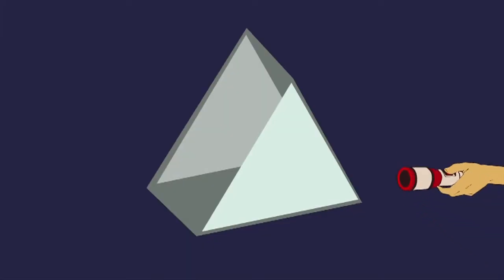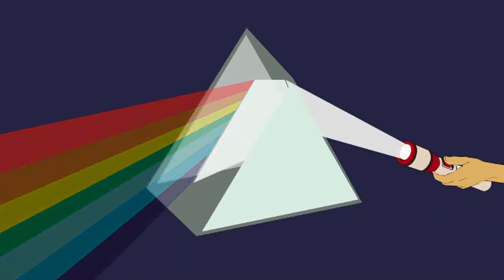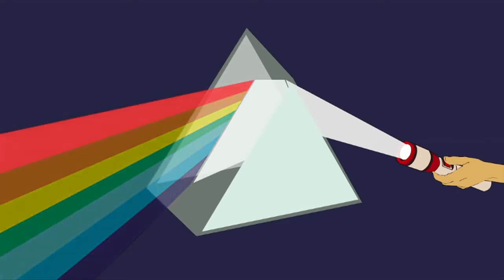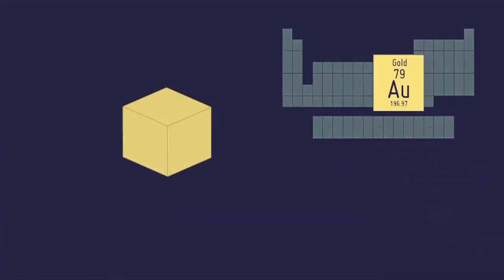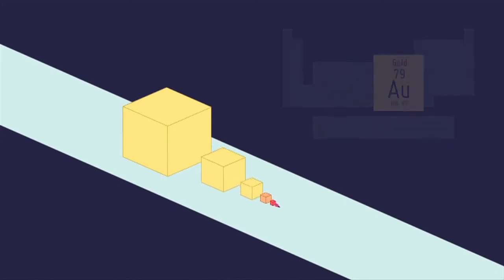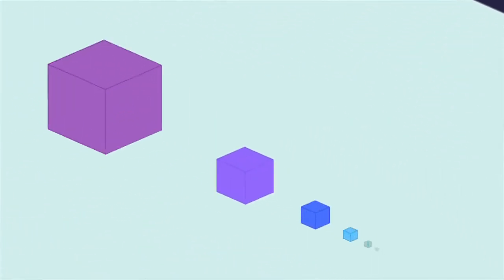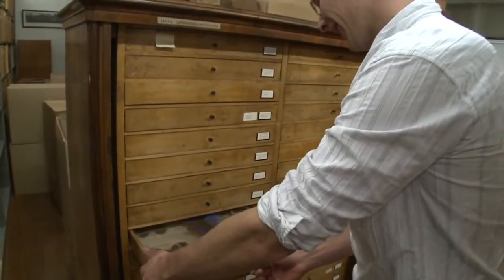Light also behaves differently as you head down to the nanoscale. White light contains all colours. When particles get really small, they start to bounce only certain colours back, so you see them as those colours. As gold gets smaller, it stops looking gold and instead reflects red, purple, blue, and finally becomes invisible when it's too small to reflect any colours of light that you can see. These strange properties of light can be very useful.